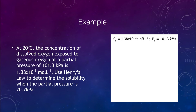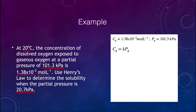At 20°C, the concentration of dissolved oxygen at a pressure of 101.3 kPa is 1.38 × 10⁻³ mol/L. We want to use Henry's Law to determine the solubility when the partial pressure is 20.7 kPa — much lower pressure. We know C_g = 1.38 × 10⁻³ mol/L and P_g = 101.3 kPa.